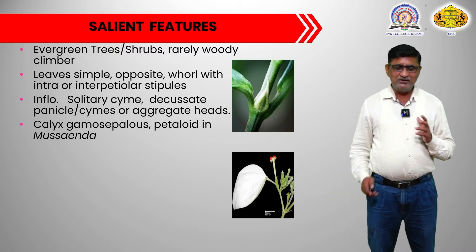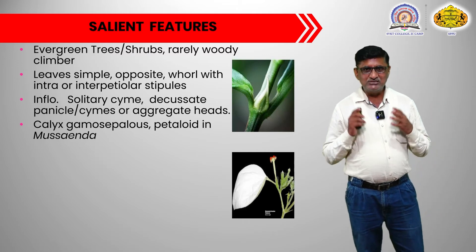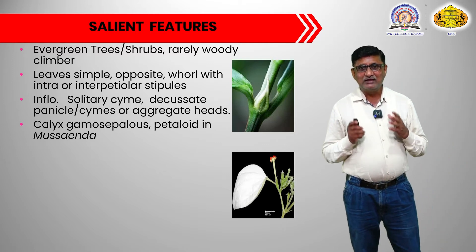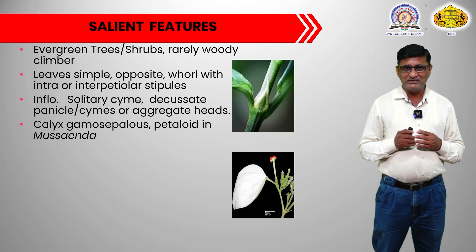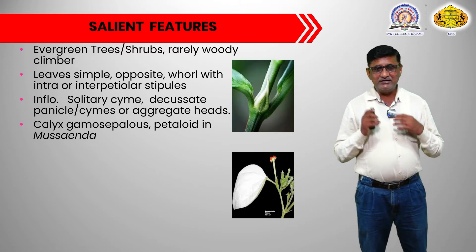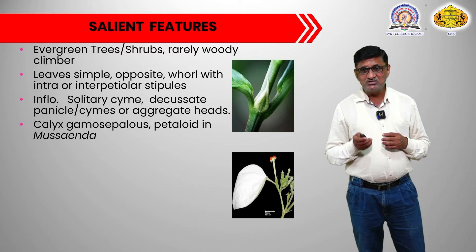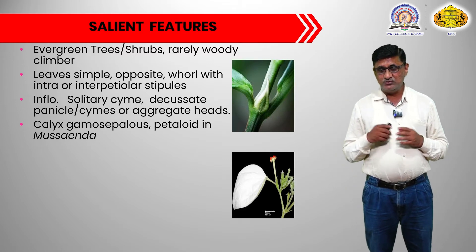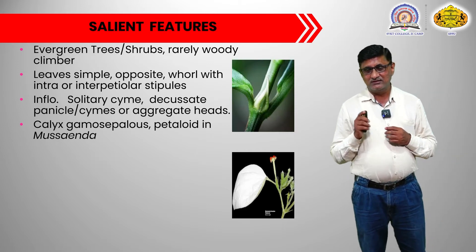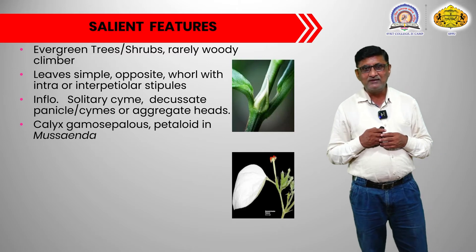First, we will see habit. The habit of plants belonging to this particular family may be small-size trees. Mostly they are shrubs, rarely woody climbers. The leaves are simple, opposite, present in a whorled phyllotaxy. The important key character is that intra- or interpetiolar stipules are present. You can see the first image — it shows the presence of interpetiolar stipules in between the petioles of two opposite leaves. The interpetiolar stipule is present at the petiolar base, and that is one of the important key features of plants of this particular family.